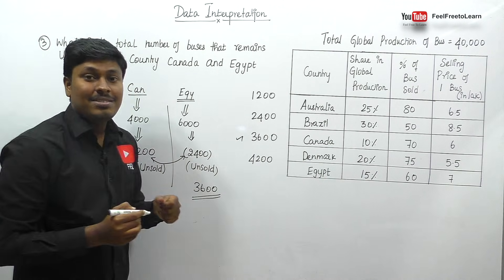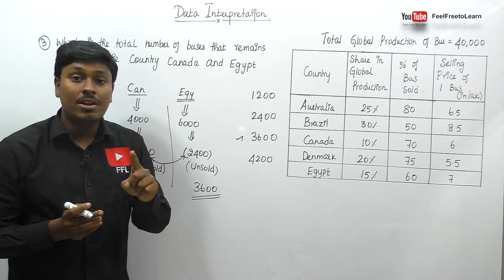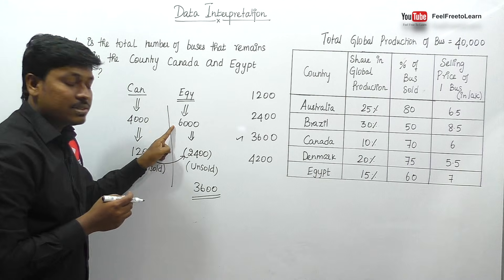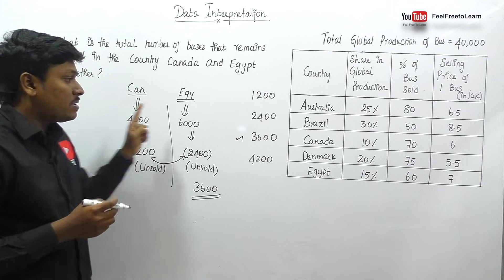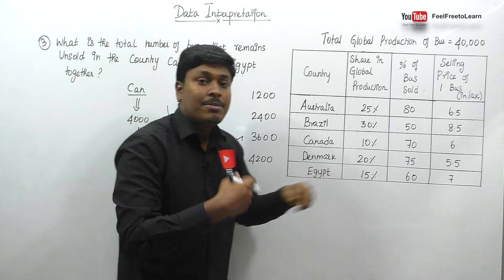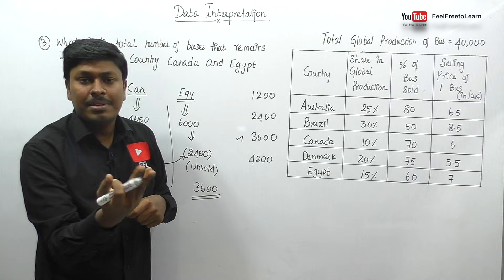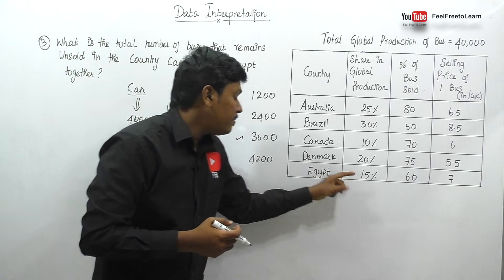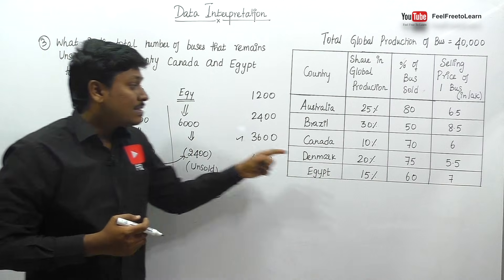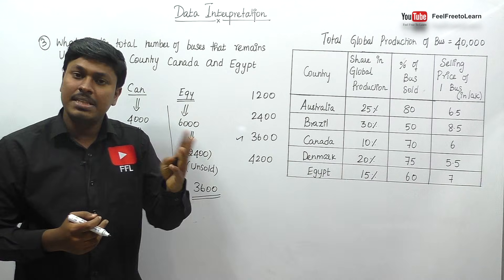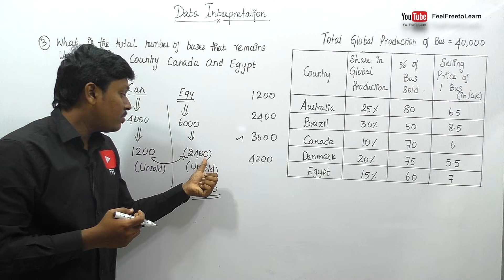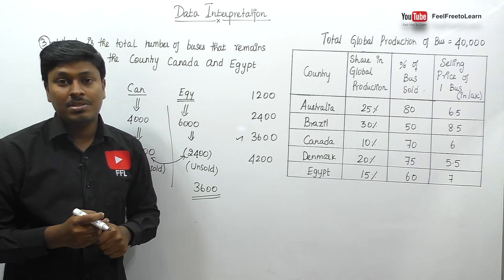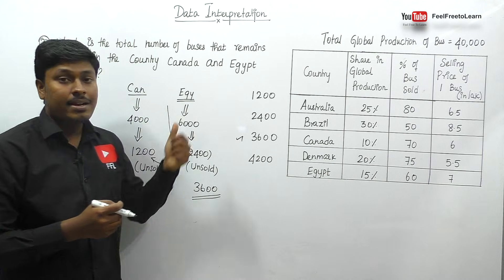The answer is option 3 — 3,600 buses are unsold. To recap: Canada got 4,000 buses, 70% sold, so 30% unsold = 1,200. Egypt got 6,000 buses, 60% sold, so 40% unsold = 2,400. Total unsold in Canada and Egypt together is 3,600 buses.